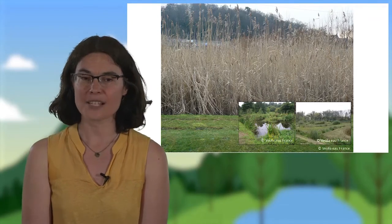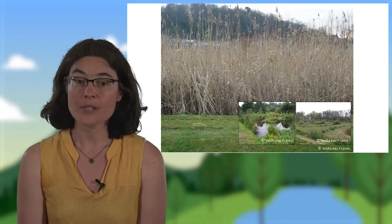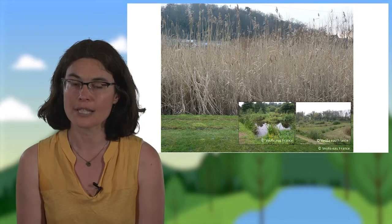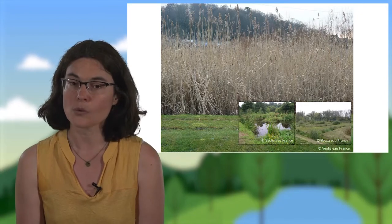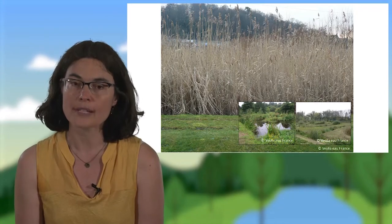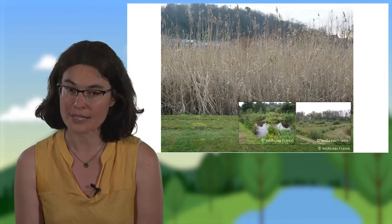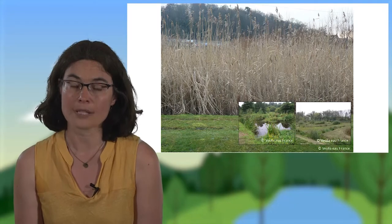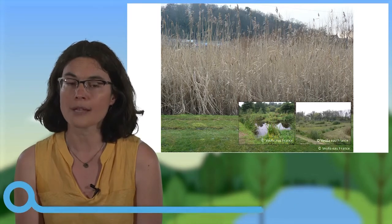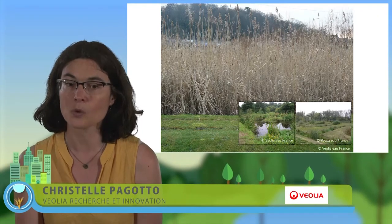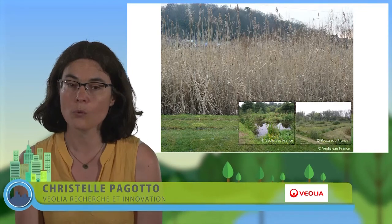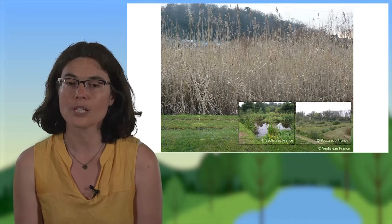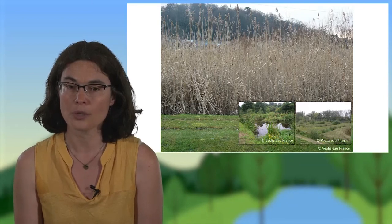En conclusion, on retiendra que ces zones de rejet végétalisées sont des outils du génie écologique particulièrement intéressants pour limiter l'impact des stations d'épuration sur les milieux aquatiques récepteurs. Elles permettent d'assurer certaines fonctions telles que la réduction des volumes, le lissage des pics de débit, ou l'accueil de biodiversité. Toutefois, les connaissances restent encore à développer, notamment pour le traitement des polluants et des micropolluants, afin de garantir de bonnes performances en les dimensionnant correctement. Et surtout, il ne faudra pas oublier de les entretenir régulièrement avec de bonnes pratiques. Ces zones de rejet végétalisées constituent aujourd'hui un défi à relever pour l'ingénierie écologique.